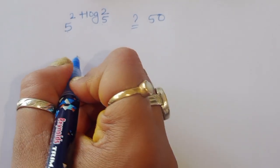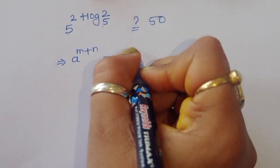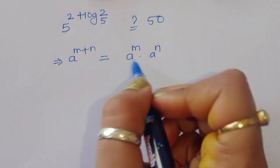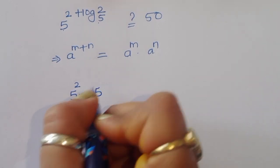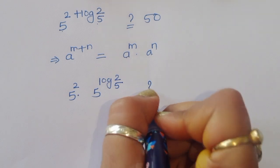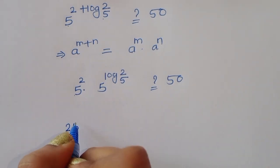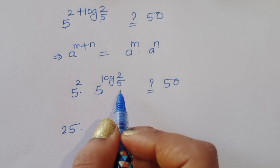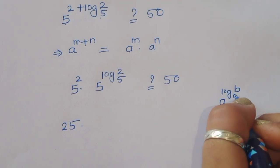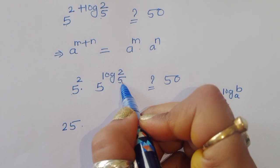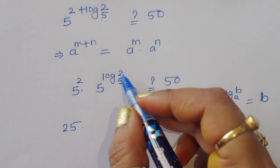Using the formula a^(m+n) = a^m · a^n, we write 5^2 · 5^(log₅2). Now 5^2 = 25. And using the formula a^(log_a b) = b, we get 5^(log₅2) = 2. So b is 2.